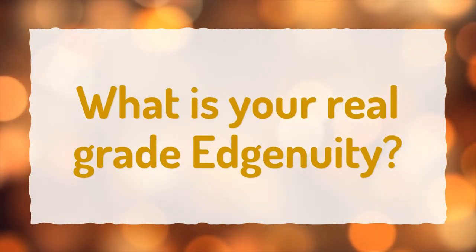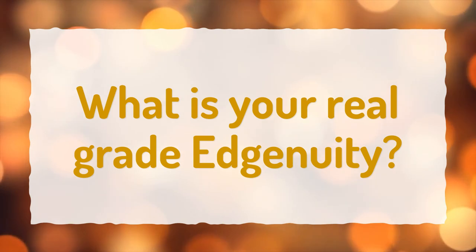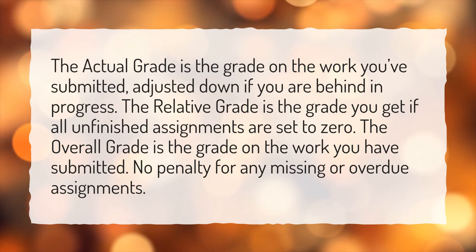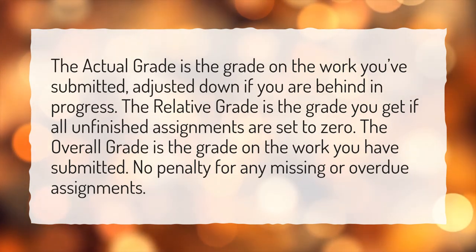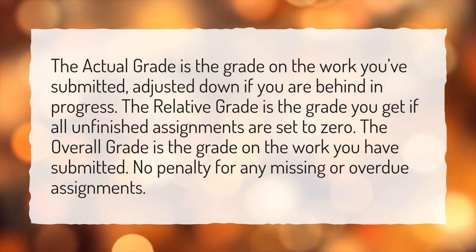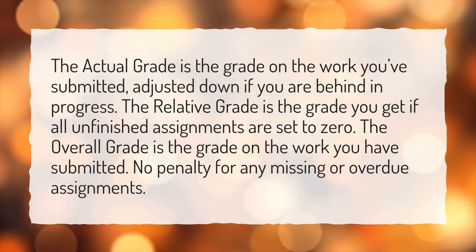What is your real grade on EGENUITY? The actual grade is the grade on the work you've submitted, adjusted down if you are behind in progress. The relative grade is the grade you get if all unfinished assignments are set to zero. The overall grade is the grade on the work you have submitted, with no penalty for any missing or overdue assignments.